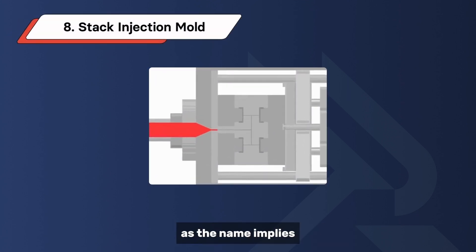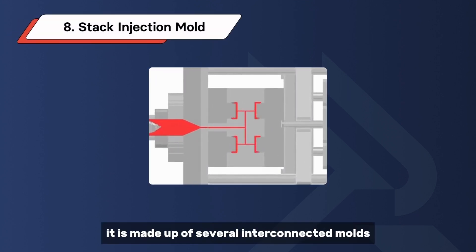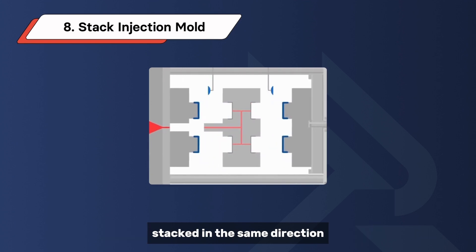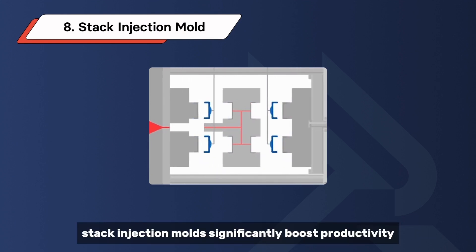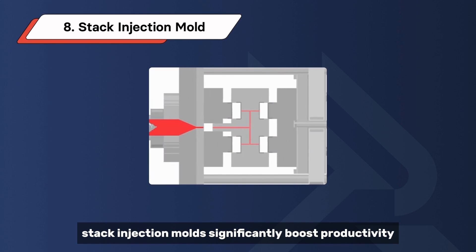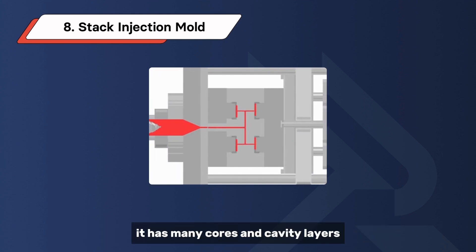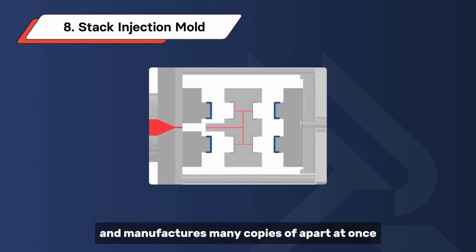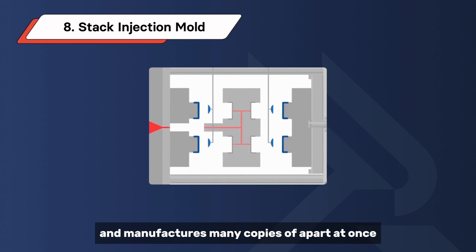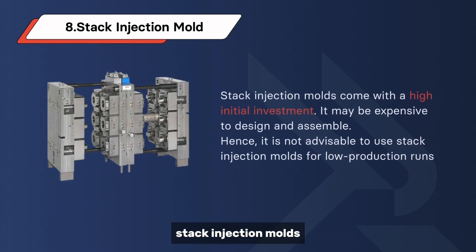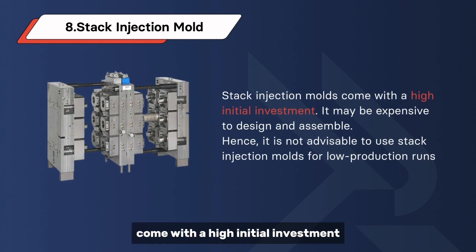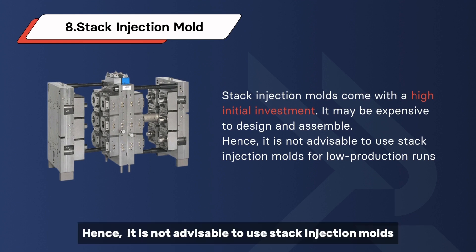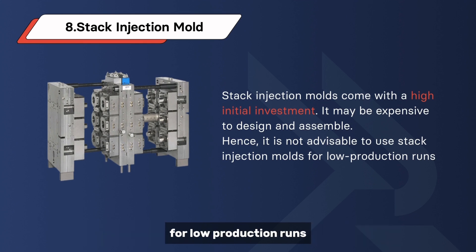The last type is the stack injection mold. As the name implies, it is made up of several interconnected molds stacked in the same direction. Stack injection molds significantly boost productivity, with many cores and cavity layers that manufacture many copies of a part at once. Stack injection molds come with a high initial investment and may be expensive to design and assemble. Hence, it is not advisable to use stack injection molds for low production runs.